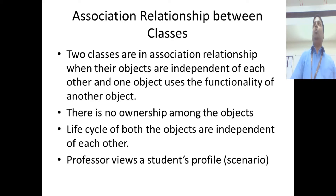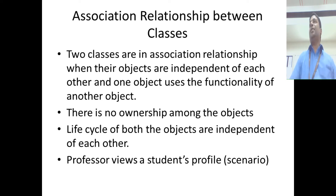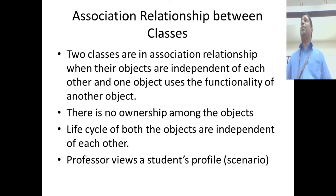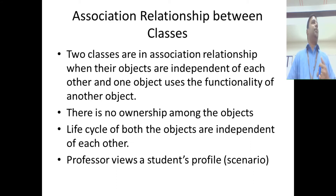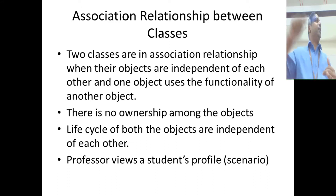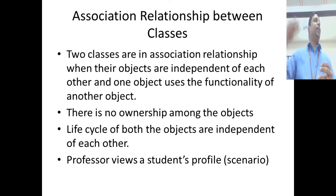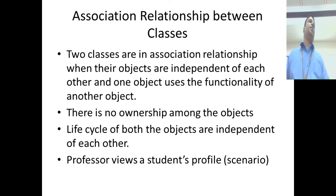Now we will come to another kind of relationship between classes: the association relationship. The other relationships we have learned are inheritance, which is an 'is-a' relationship, and realization, which is also an 'is-a' relationship — the only difference is that realization implements an interface while inheritance extends a class.